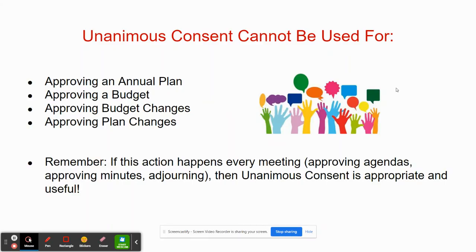A few notes from the clip that we just watched. With unanimous consent, you may still have an amended agenda or corrected minutes to be approved. You simply ask for amendments or corrections, register them in the minutes, and then proceed to unanimous consent voting.